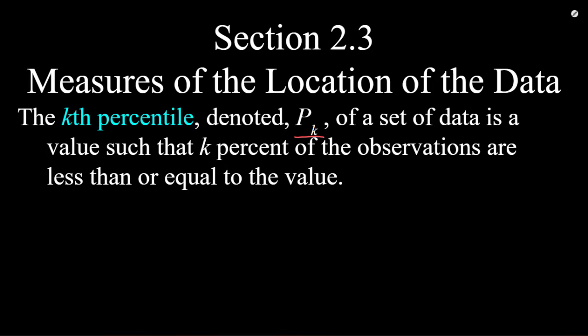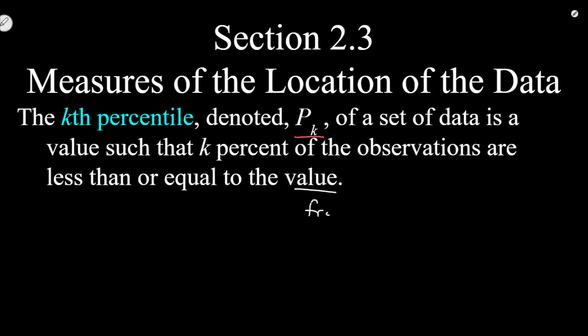This percentile will be a value from the data. For continuous data, it may not be an actual point from the data, but in our case we're talking about discrete data. This will be a point from the data, and k percent of the other observations will be less than or equal to that kth percentile value.